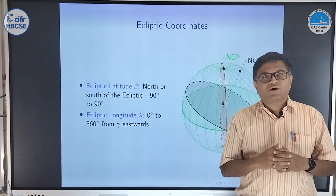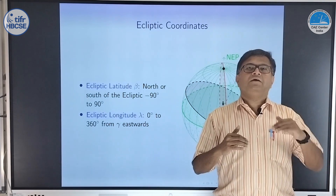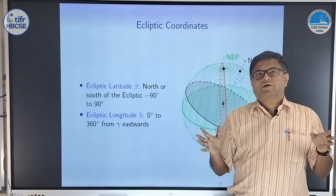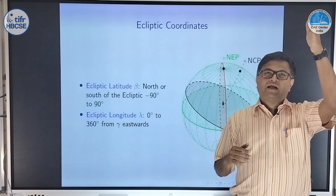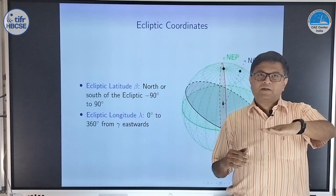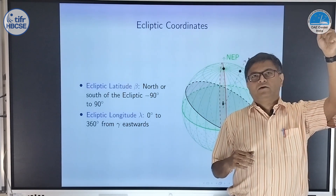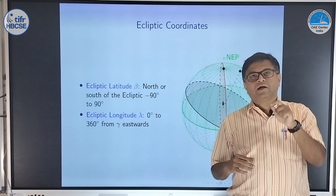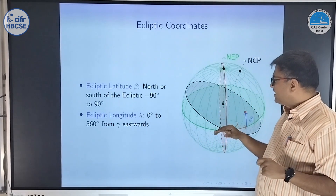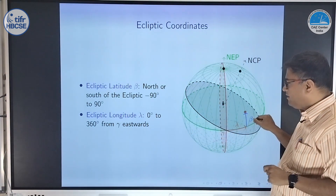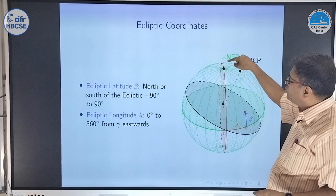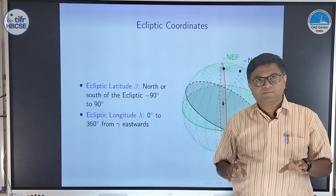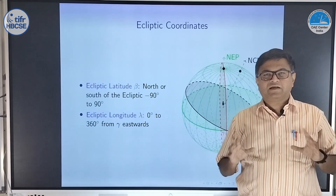We define coordinates called ecliptic latitude and ecliptic longitude with the ecliptic as a reference. In the RA/Dec system, if you remember, we took the equator as our reference — one reference circle was our equator. The second reference was the arc which passed through the north celestial pole and south celestial pole, cutting the equator at the vernal equinox point. Now here, we will take the ecliptic as a reference — the green circle — and the arc which passes through north ecliptic pole and south ecliptic pole, cutting the ecliptic at the same vernal equinox point. We define our coordinates with those references.